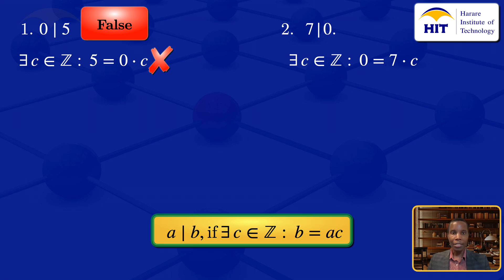In this case, it is true we can find an integer C. If we put in 0 there, it will give us 0 equals 7 times 0. So this one is true and integer C exists. We conclude that it is true that 7 divides 0.